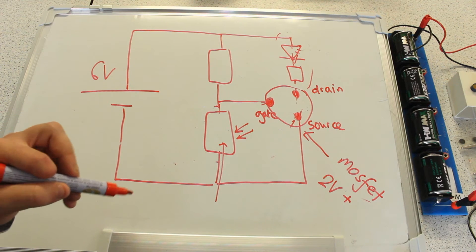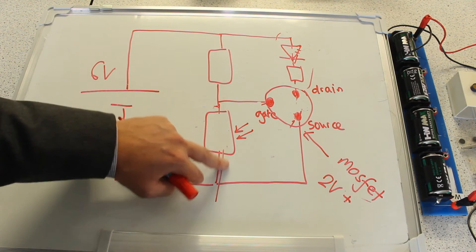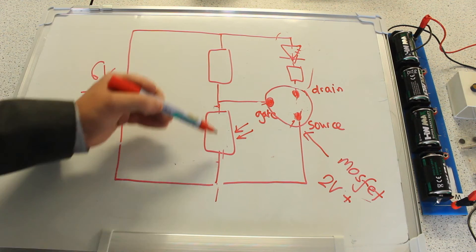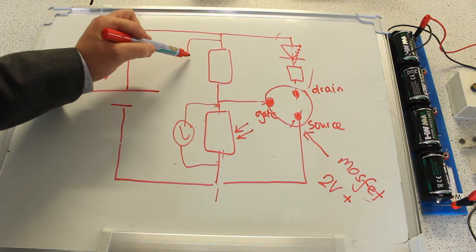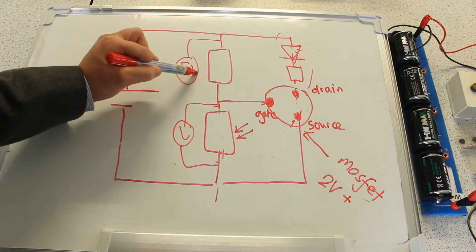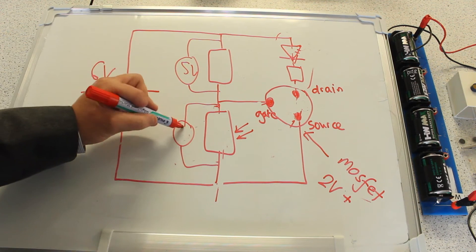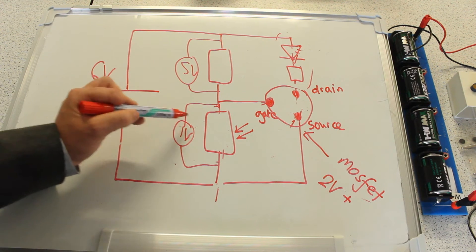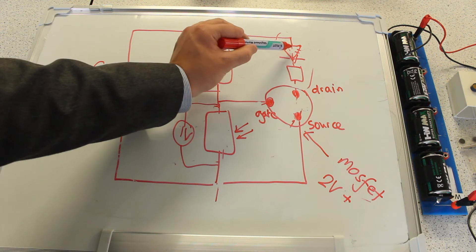When the light is shining on the LDR, it has a low resistance. Because it has a low resistance relative to the overall resistance of this branch, the voltage drop over the LDR is small. Most of the voltage, let's say five of the six volts provided, is dropped over the fixed resistor and only one volt is dropped over the LDR. This voltage drop over the LDR is too small to activate the transistor and so the LED doesn't light.